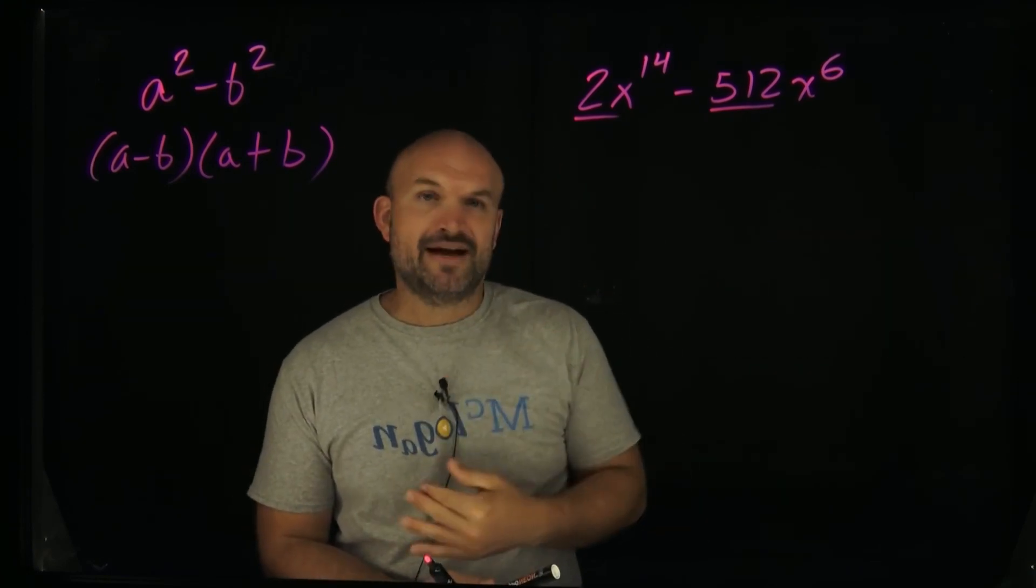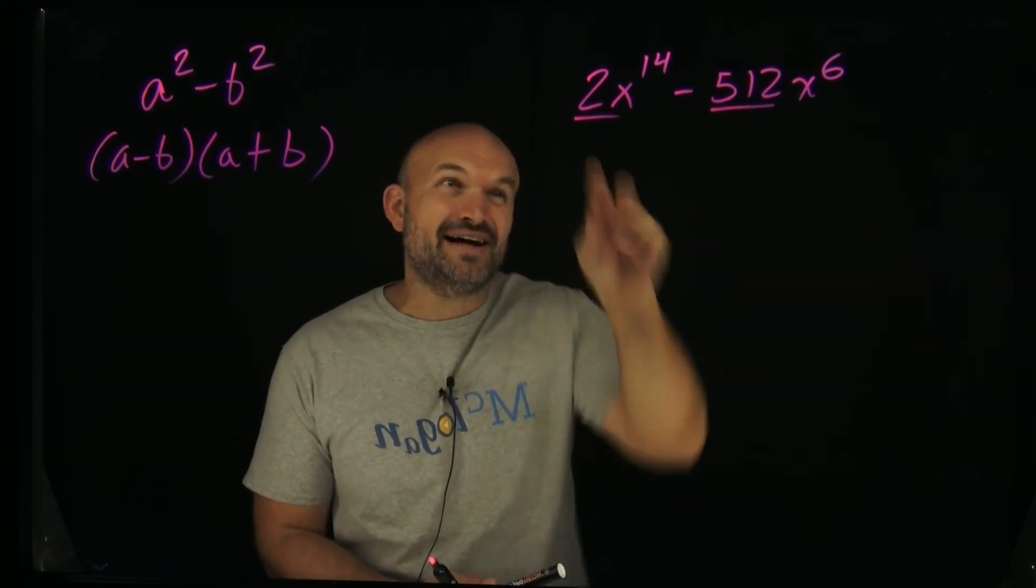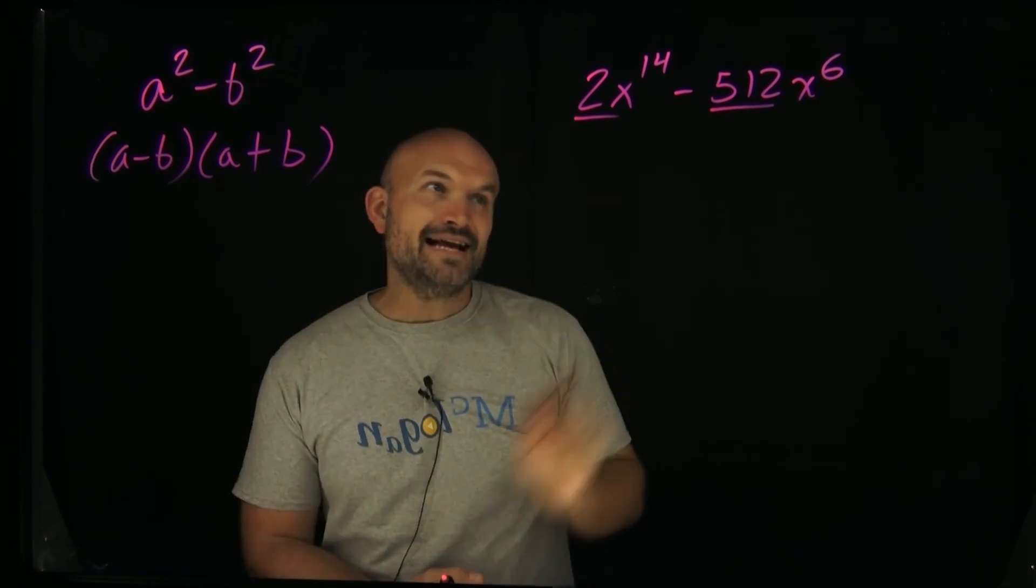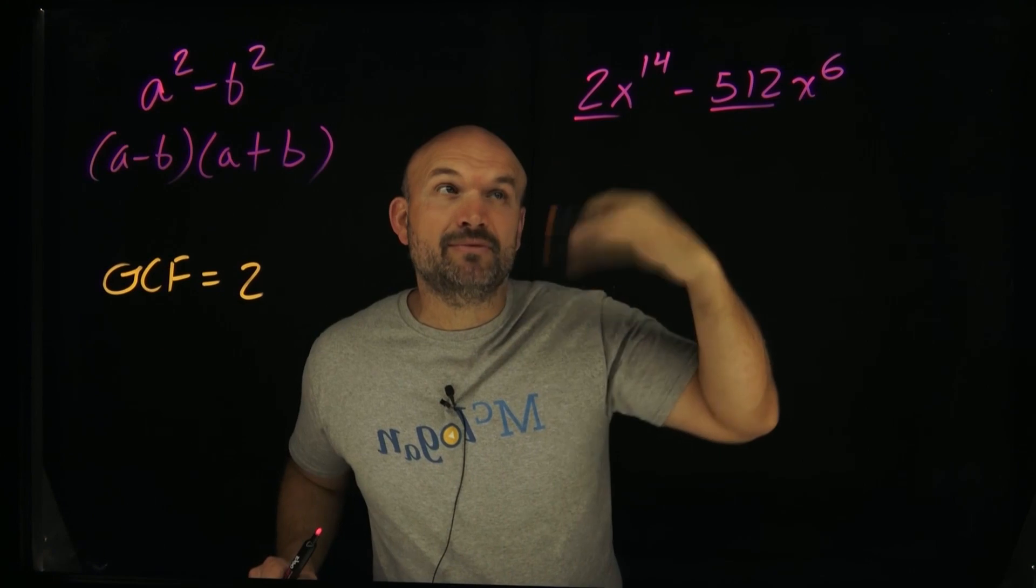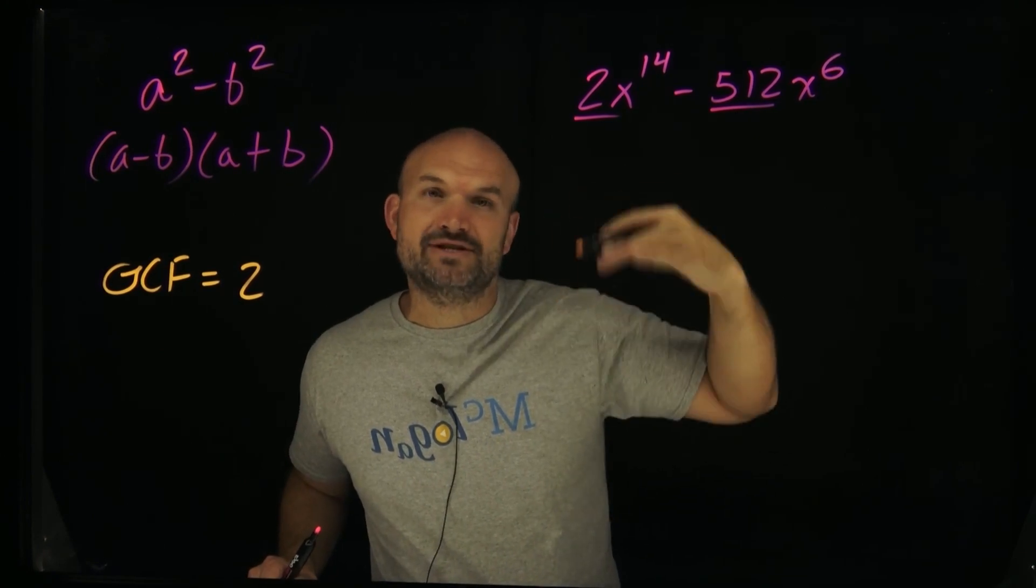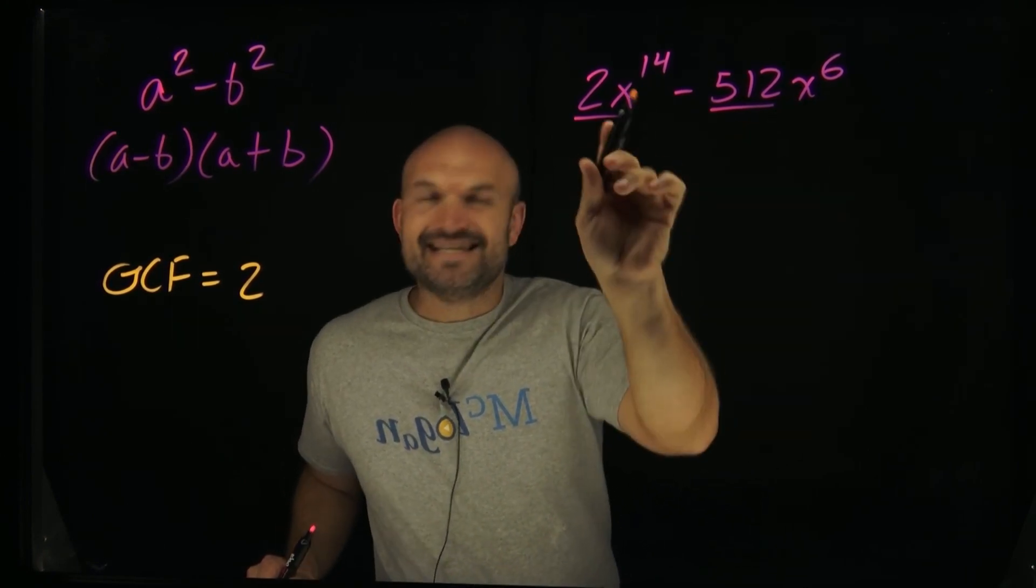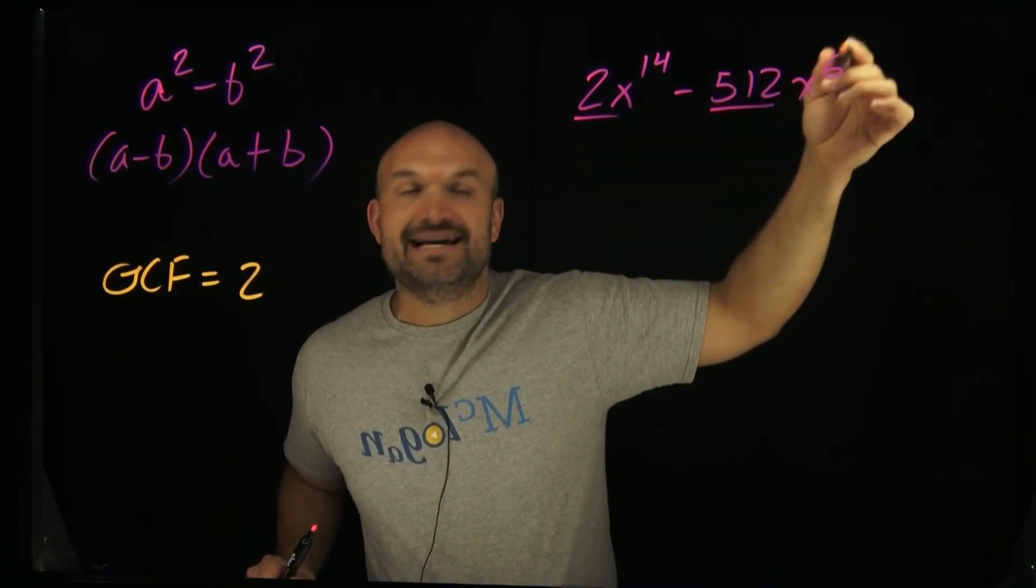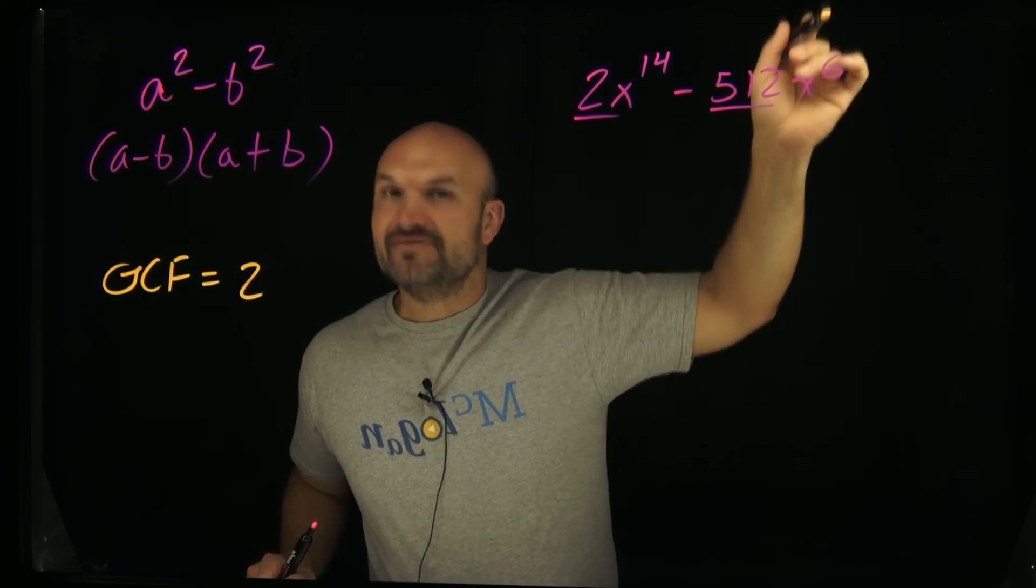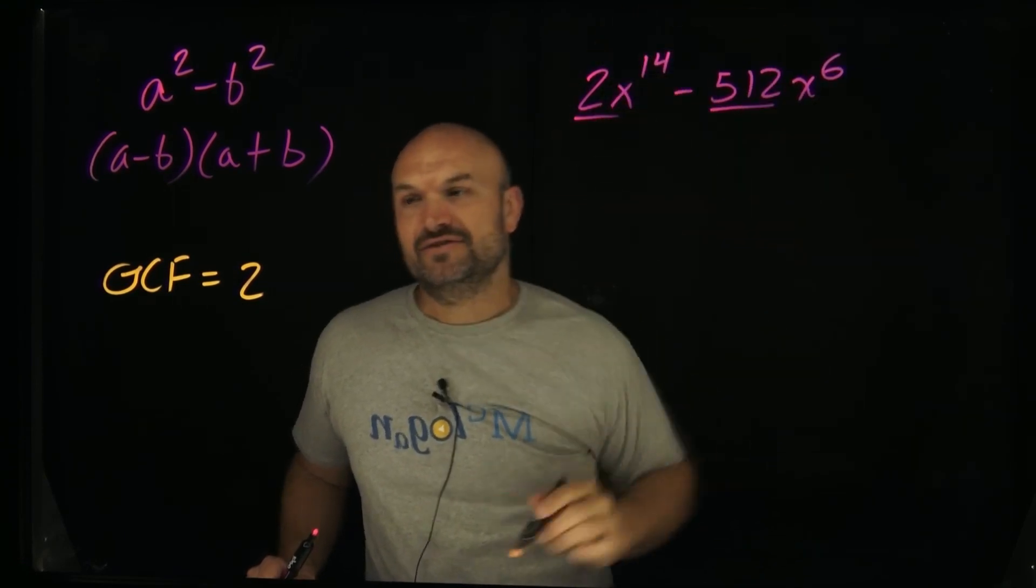Now the GCF is the greatest common factor, the greatest factor that evenly divides into both of these terms. And that is going to be a 2. And then the highest variable x raised to the highest power that divides into both of these is not going to be x to the 14th. It's going to be x to the 6th, because x to the 14th does not evenly divide into x to the 6th. x to the 6th does divide into x to the 6th, as well as x to the 14th.